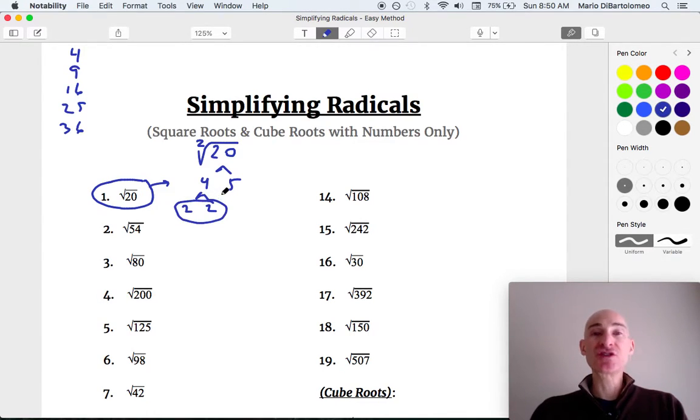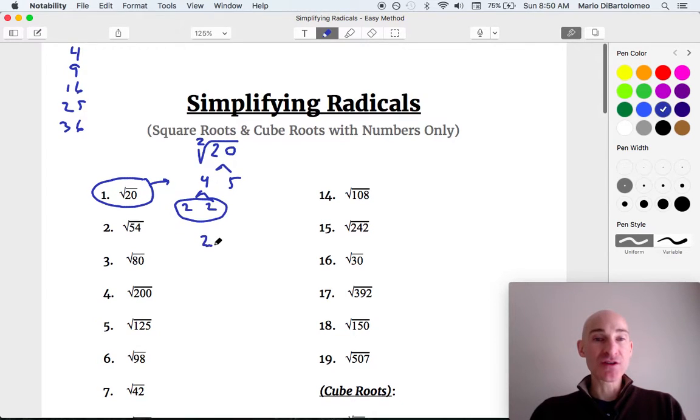It doesn't have to be the number 2. It just has to be a pair of the same number. So for each pair, for each group of 2 numbers, you get 1 of that quantity. So this would be 2. And then you're left with 5 left over because we only have one 5 here.